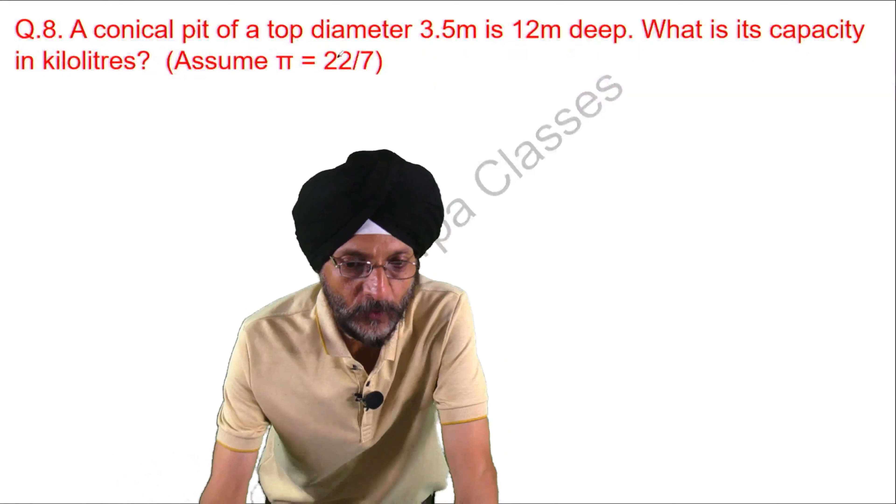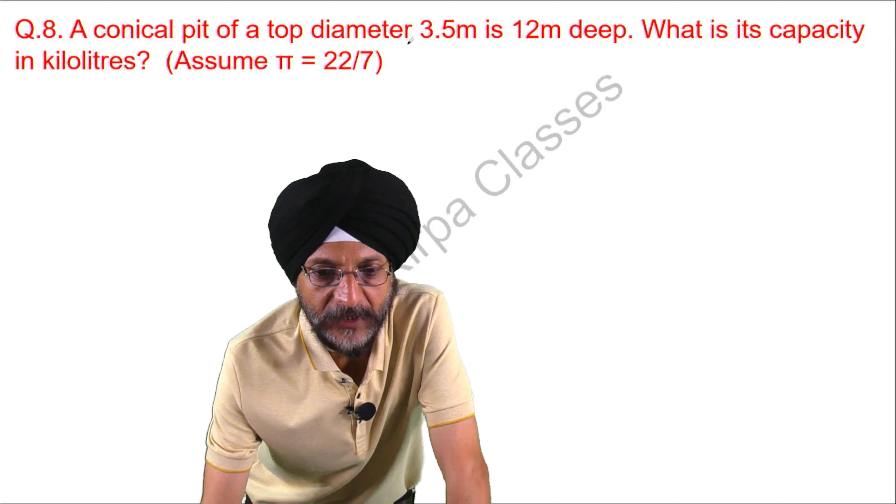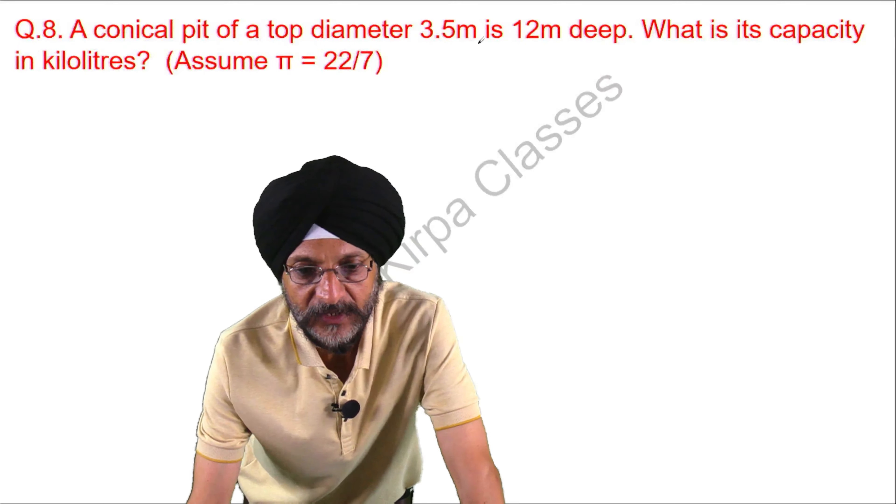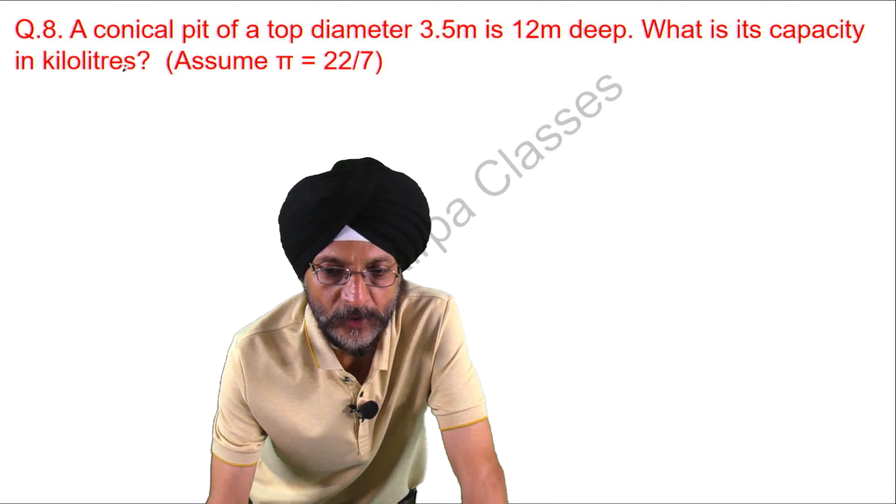Now, the question before us is: a conical pit of a top diameter 3.5 meter is 12 meter deep. What is the capacity in kiloliters?